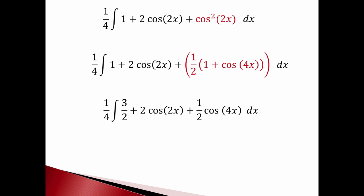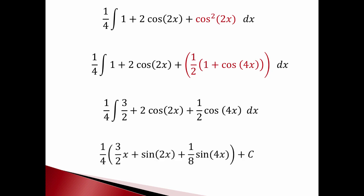I'll leave that extra 1/4 that was outside — it's been dangling around out there. Bringing it inside is too much fraction to deal with. So we have 3/4 from the constant terms, then 2 cosine of 2x, then finally 1/2 cosine of 4x. This is an integral we can do. Integrate 3/2 and you get (3/2)x. Integrate 2 cosine of 2x and that's sine of 2x.